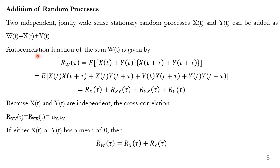Then the autocorrelation function for w(t) is given by R_w(τ) = E[x(t) + y(t)] · [x(t+τ) + y(t+τ)]. When we expand this, we get E[x(t)·x(t+τ)] + E[x(t)·y(t+τ)] + E[y(t)·x(t+τ)] + E[y(t)·y(t+τ)].